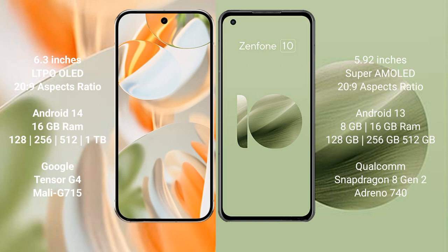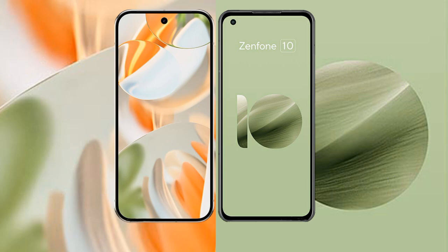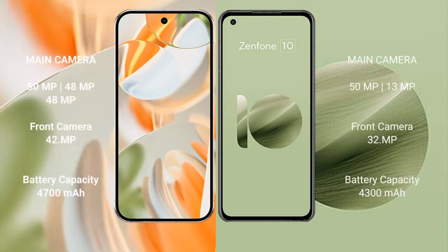The Google Pixel 9 Pro is powered by the Google Tensor G4 processor with Mali G715 GPU. The Asus Zenfone 10 offers 8 or 16 GB RAM with 128GB, 256GB, or 512GB internal storage, running a Qualcomm Snapdragon 8 Gen 2 processor with Adreno 740 GPU.